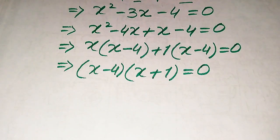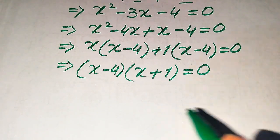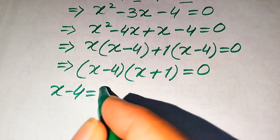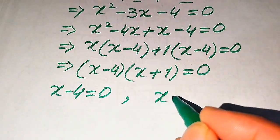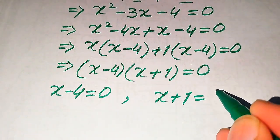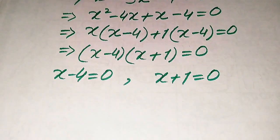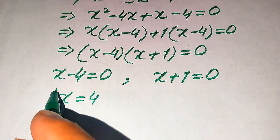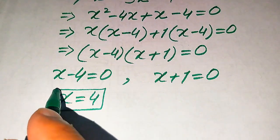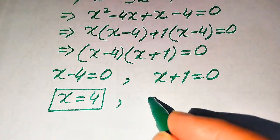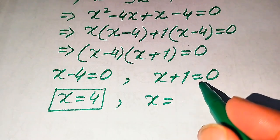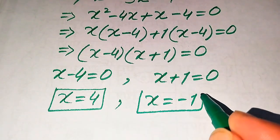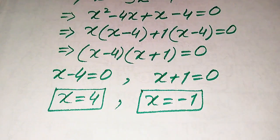We divide into two cases. Case 1: x minus 4 equals 0, which gives x equals 4 — the first root. Case 2: x plus 1 equals 0, so we move plus 1 to the right-hand side and get x equals minus 1 — the second root.